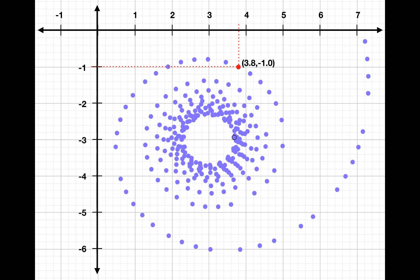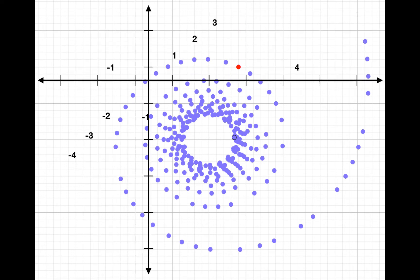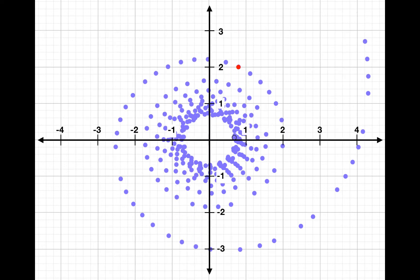The axes can go wherever you want, and if you want the origin to be smack dab in the middle of the action, that's fine, but the coordinates of the point will change. And so for these axes, the coordinates are 0.8, 2.0.